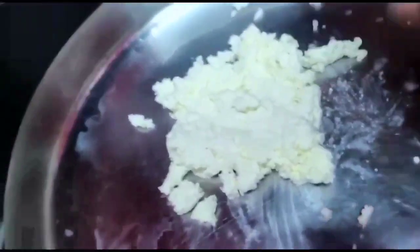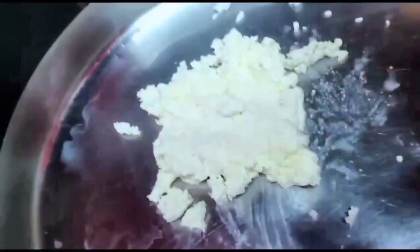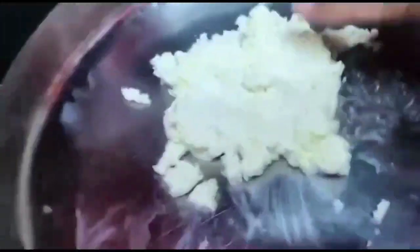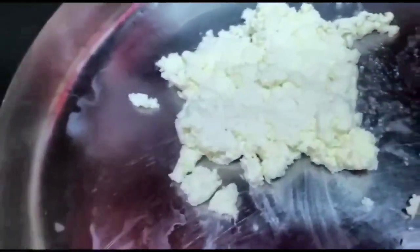Transfer the paneer into a plate. You can prepare three items that is Rasmalai, Rasgulla, and Paneer. After transferring this into plate, add little bit of maida. Mix this well.